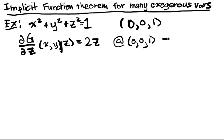Which does not equal 0. And if we think of x and y fixed, then we've essentially satisfied our implicit function theorem restrictions.